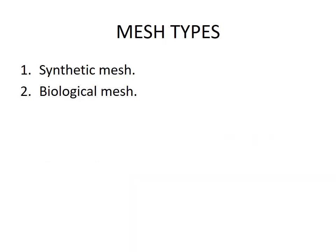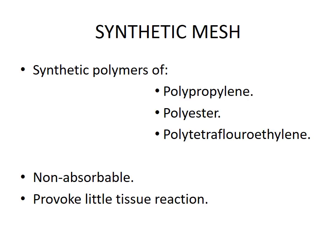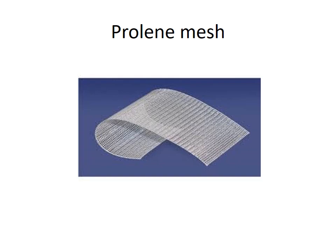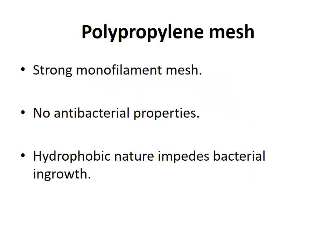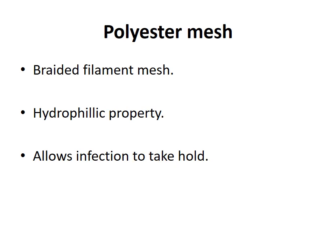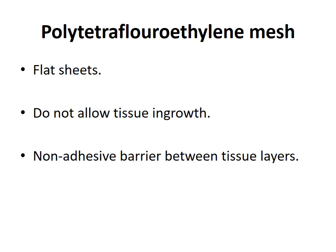Mesh types: (1) synthetic mesh and (2) biological mesh. Synthetic mesh is made from synthetic polymers of polypropylene, polyester, or polytetrafluoroethylene — non-absorbable, provoking little tissue reaction. Polypropylene mesh is a strong monofilament mesh with no antibacterial properties; its hydrophobic nature impedes bacterial ingrowth. Braided filament polyester mesh has hydrophilic properties, which allows infection to take hold. Polytetrafluoroethylene mesh comes in flat sheets and does not allow tissue ingrowth, acting as a non-adhesive barrier between tissue layers.